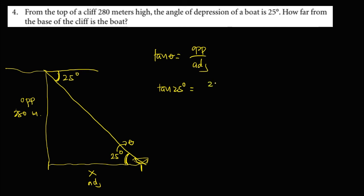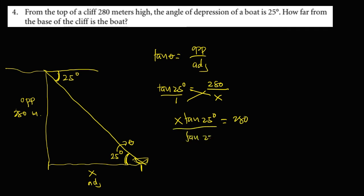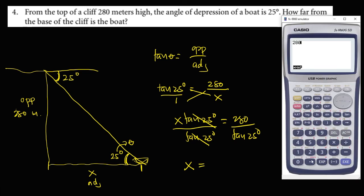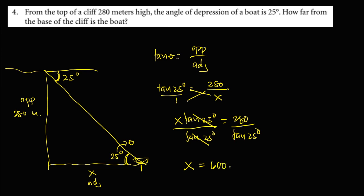Tangent 25 degrees equals the opposite, that's 280 meters, over the adjacent, that's x. Do cross multiplication: x times tangent 25 degrees equals 280. Divide both sides by tangent 25 degrees, so x equals 280 divided by tangent 25 degrees, that's 600.46 meters. This is the distance from the base of the cliff to the boat.